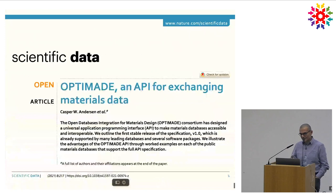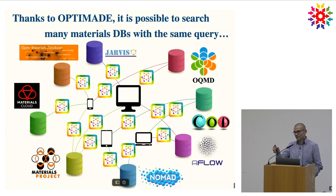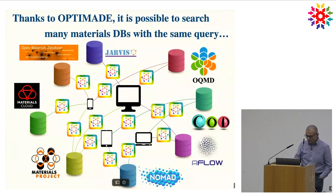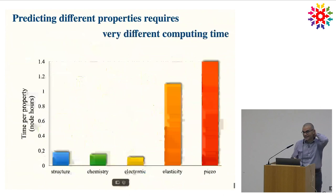This common API is called OPTIMADE. Now it is possible to query all these databases with the same exact query and get the same form for the response. It's published in Scientific Data in 2021. That's implemented in NOMAD — when you go on the web page of NOMAD, you can decide whether you query using the NOMAD API or the OPTIMADE API. This is important for machine learning, because we want to gather as many data as possible.